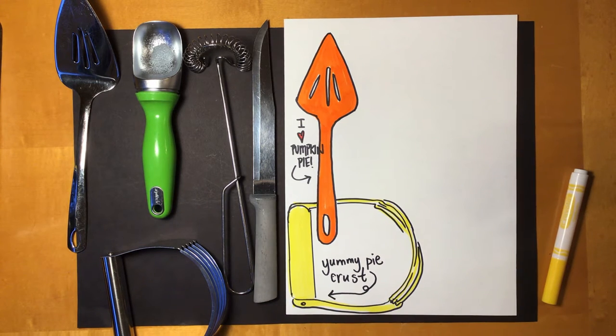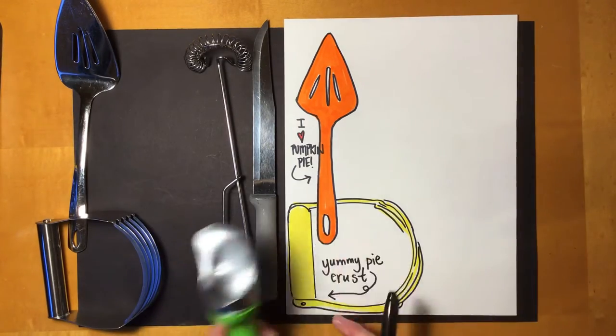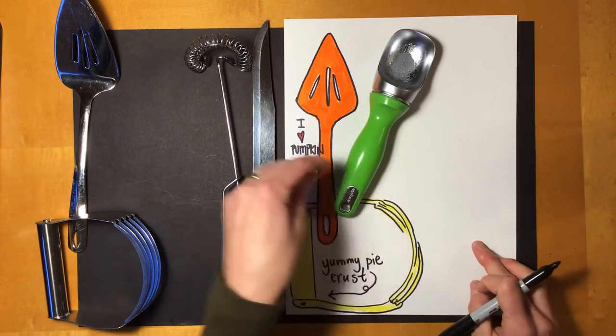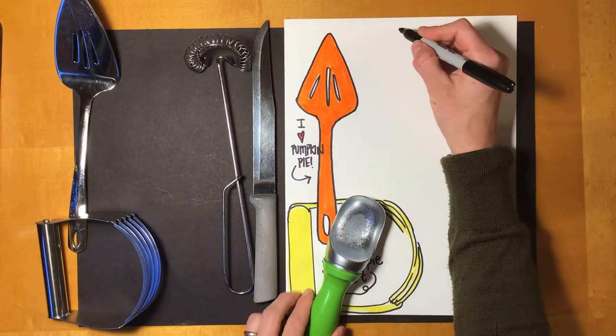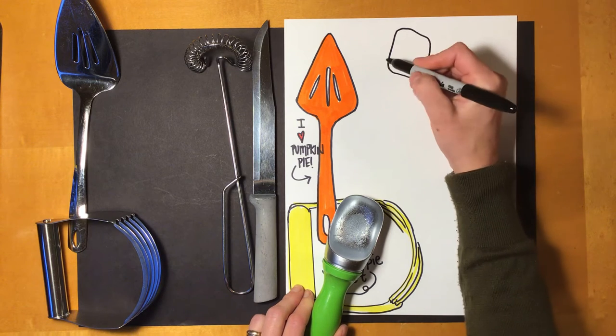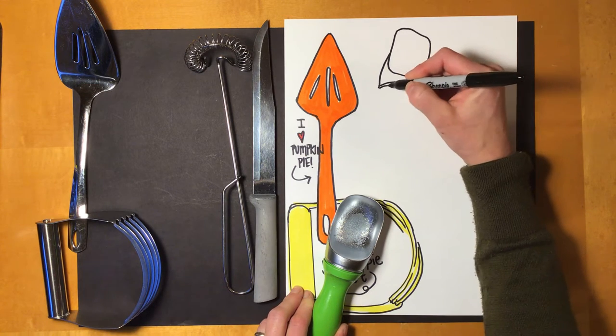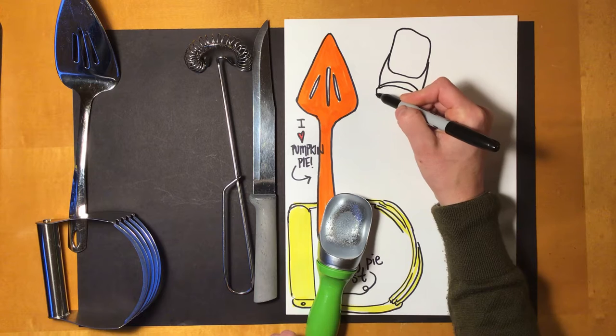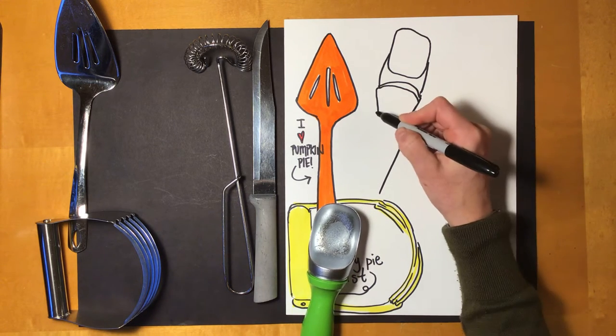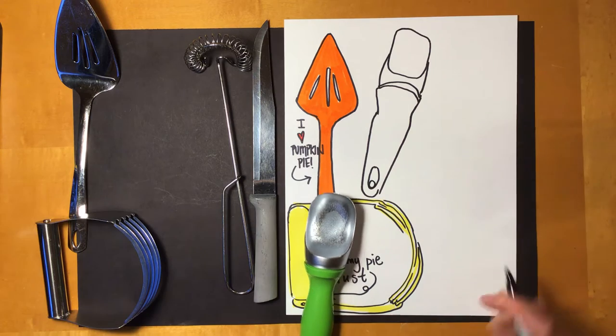So the pastry blender is what makes that pie crust all flaky and yummy. So that's going to be my note for that. Now you can see my first three all have to do with the pie because it's the ice cream that goes with the pie. And so I'm going to draw the ice cream scoop as well. Now, some people have Cool Whip or whipping cream with their pie. I like ice cream.